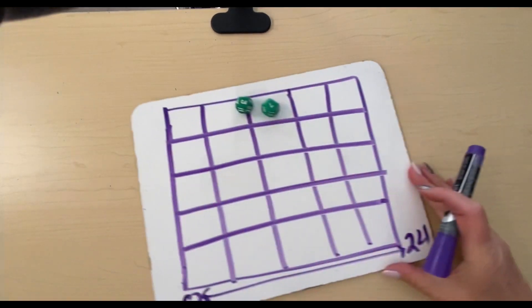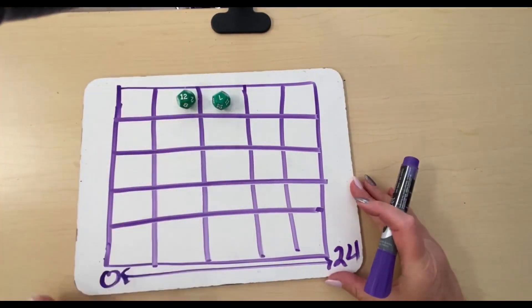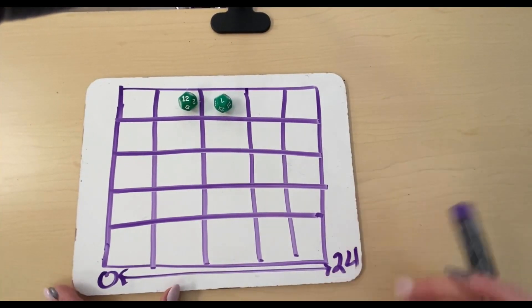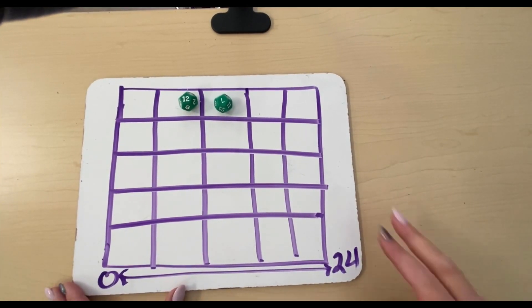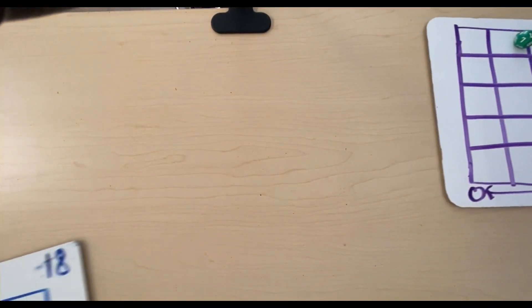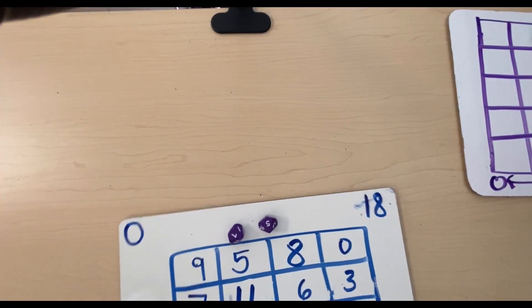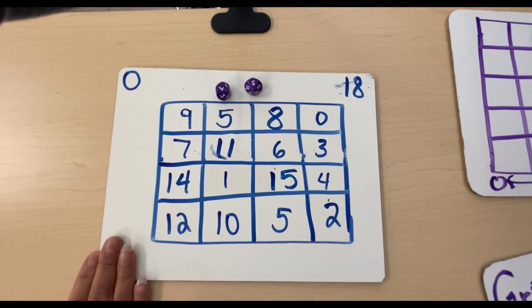And if you're going to use twelve by twelve dice, you're going to use a five by five grid, and your range is going to be zero to twenty-four, but we're going to show you the game with nine sided dice. Go for it, Sylvia.